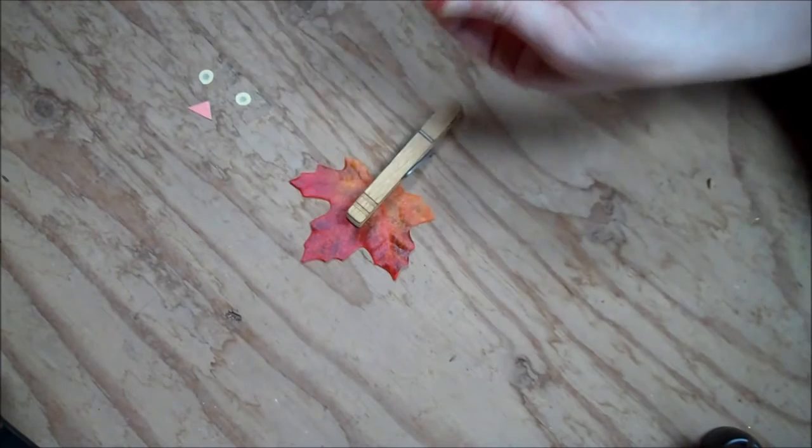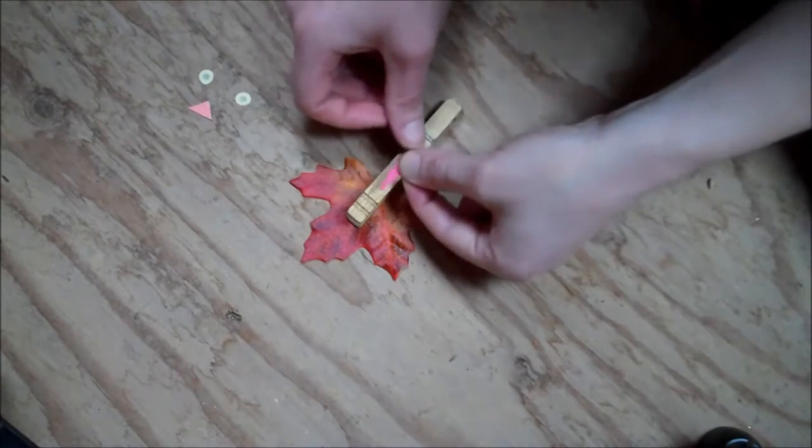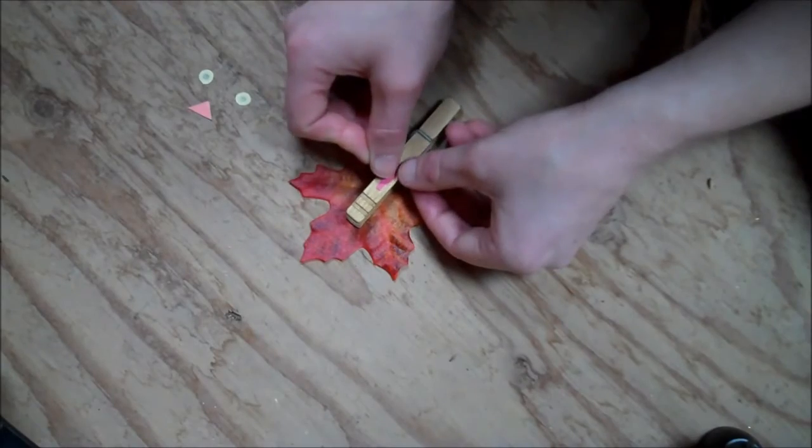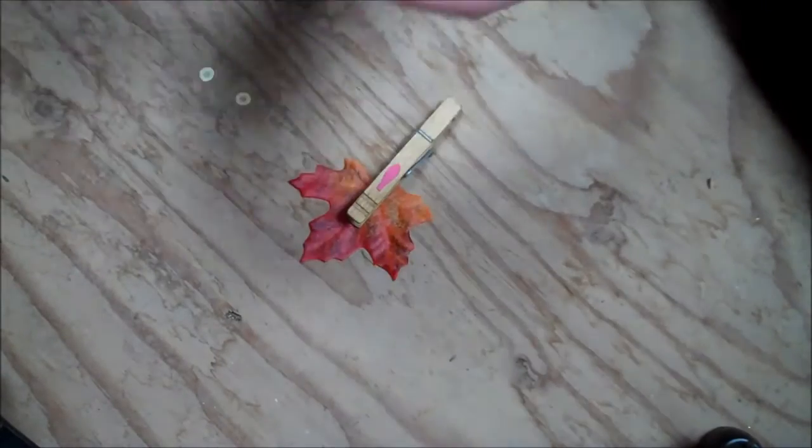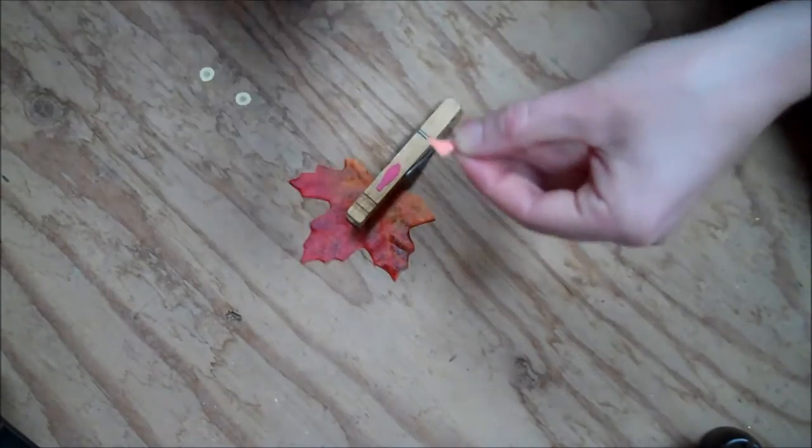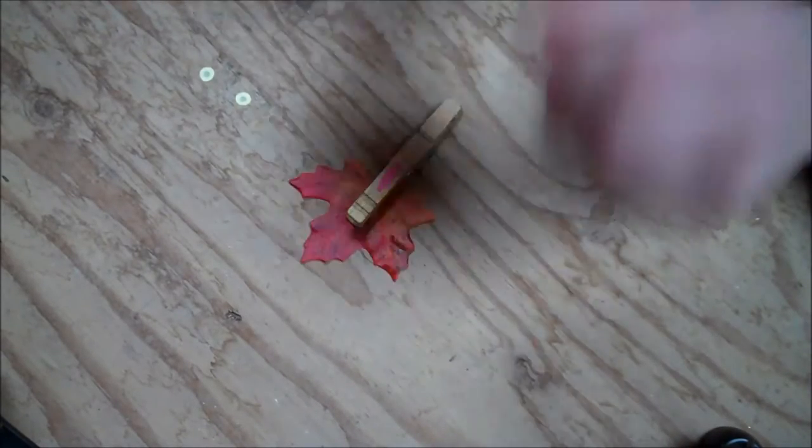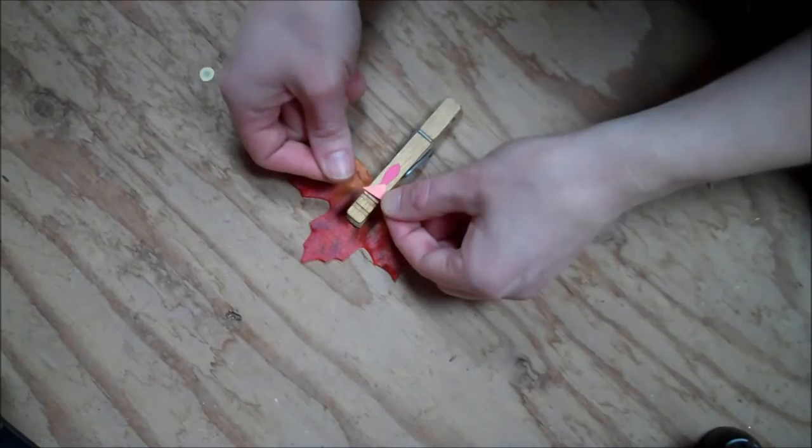Then just put a little bit of glue on the back of the gobbler. Glue that about an inch from the top of the clothespin. And then take the beak and put a little bit of glue on the back of that and glue it just over the gobbler.